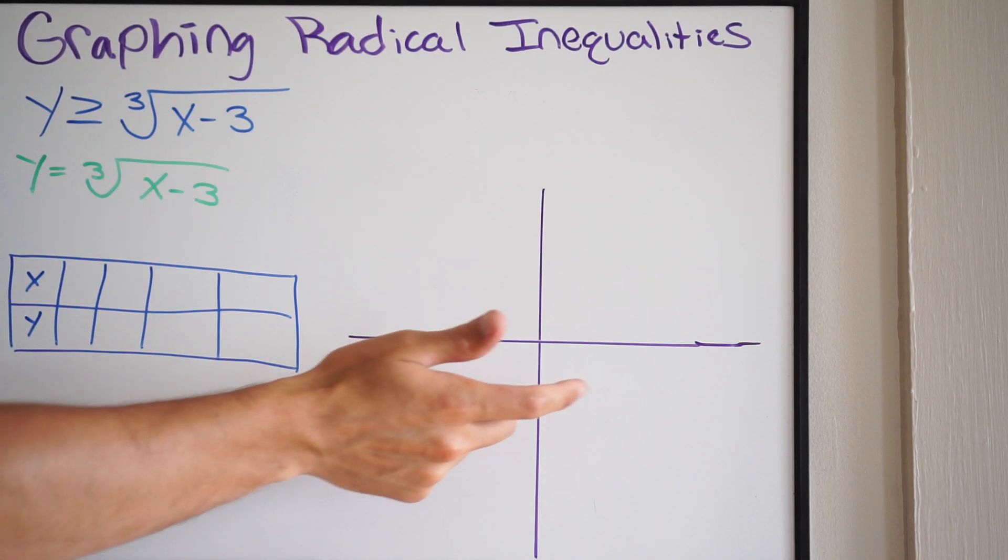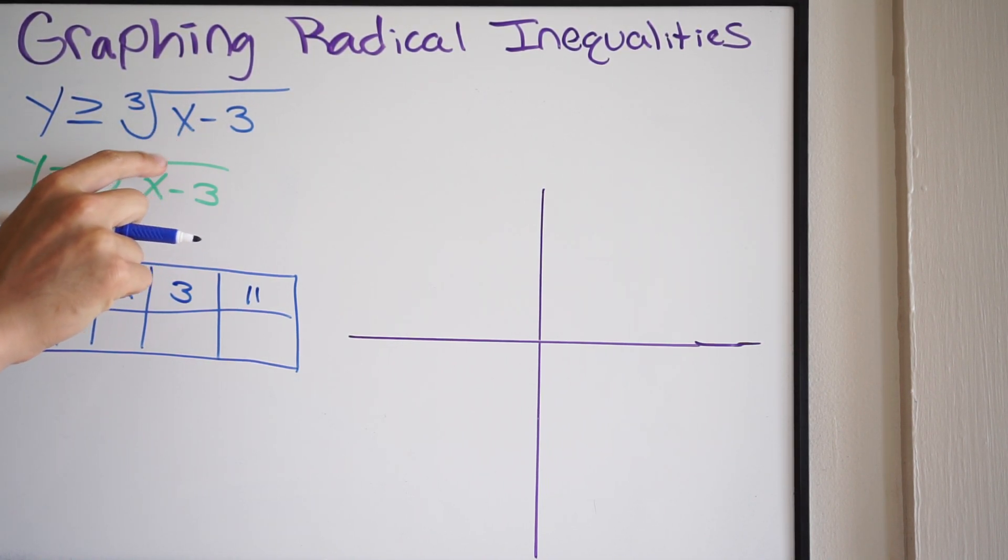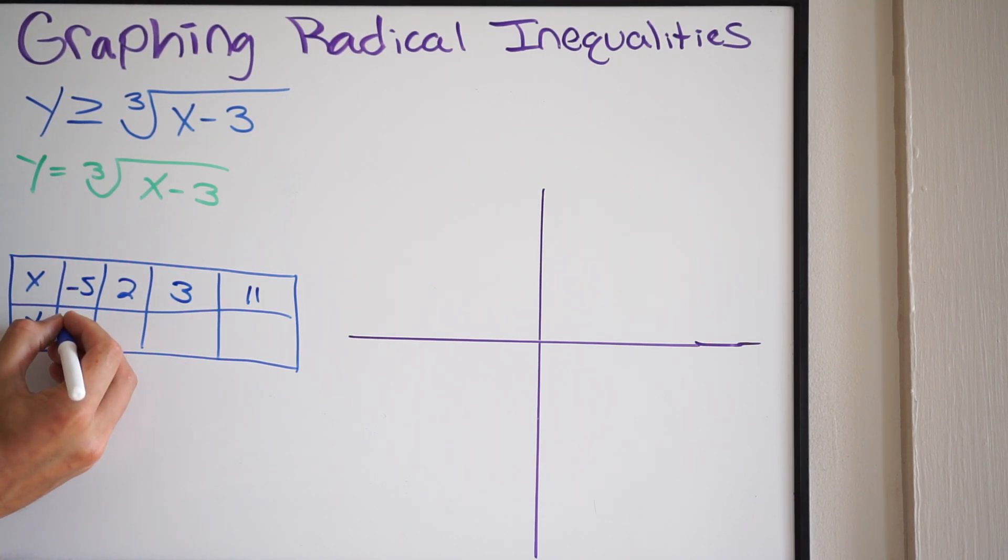Okay, so let's go ahead and just pick some values here for x. We want to pick some values to the left and to the right. Alright, remember, there's no restriction on our domain, so we can pick negative numbers here. So I'm going to pick negative 5. So I'll pick negative 5. We can also pick, let's pick 2. Let's pick 3. And let's pick 11.